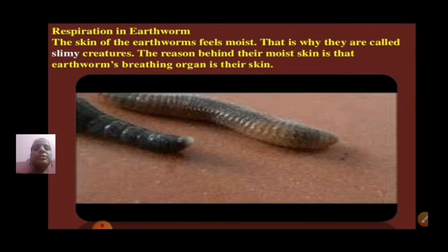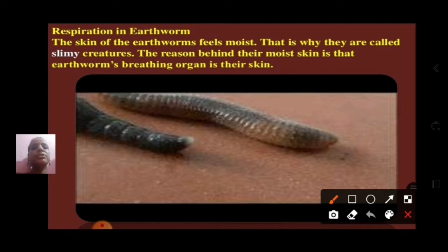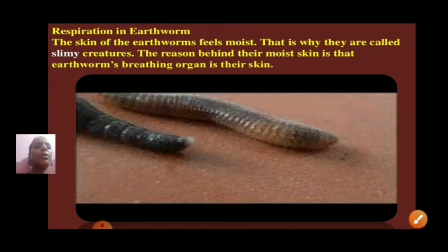But there are some other organisms which do not have a specialized organ for breathing. For example, let us start with respiration in earthworms. The skin of earthworms feels moist, that is why they are called slimy creatures. The reason behind their moist skin is that the earthworm's breathing organ is their skin only.